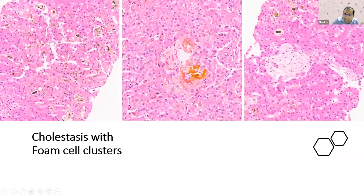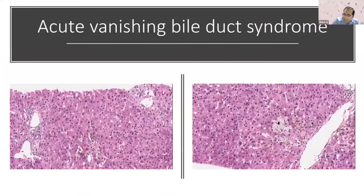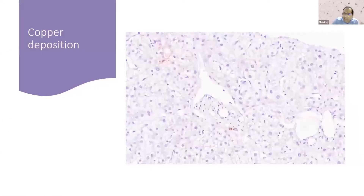This is a pediatric allograft — a referral biopsy from the center — and within a month of pediatric transplant there was complete ductopenia with cholestasis and foam cells. You can rarely see cases of acute vanishing bile duct syndrome. In late stages of CR, if you do copper stains, you can also see some periportal copper deposition, visible as red granules in the rhodanine stain.